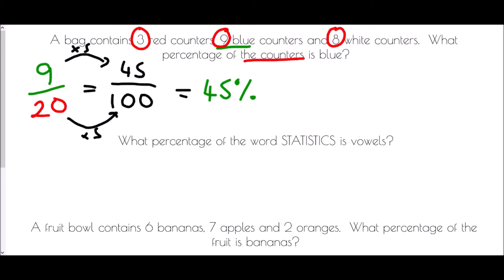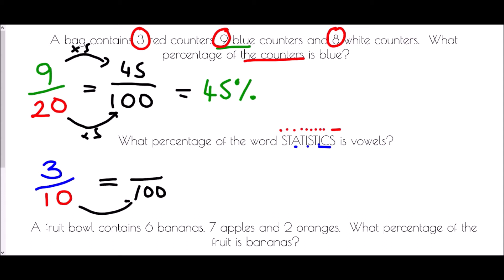What percentage of the word 'statistics' is vowels? We identify the vowels: A, I, and I — so there are 3 vowels. Counting all letters gives 10 in total, so that is 3 tenths. To turn this into a percentage we multiply by 10 top and bottom: 3 times 10 is 30. Therefore 30 percent of the letters are vowels.